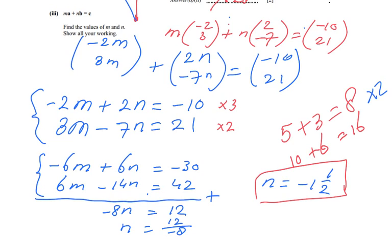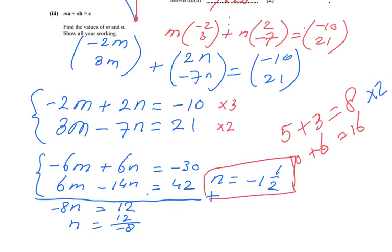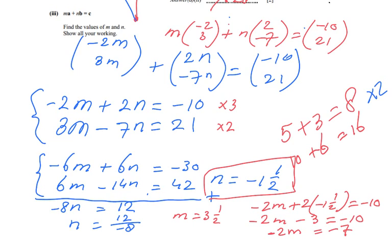How can I find the value of M? Well, I substitute this one in either one of the equations. Let's do the top one. So -2M + 2 times -1.5 = -10. I'm substituting the value of N in this equation so I can find my value of M. So -2M - 3 = -10. So -2M = -7, and I divide both sides by -2. M is going to be 3.5, a positive 3.5.